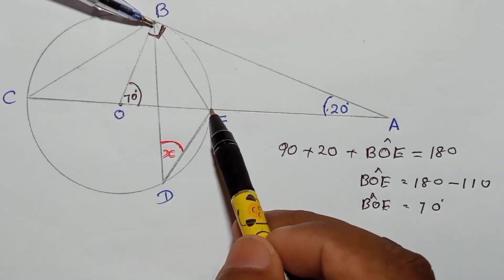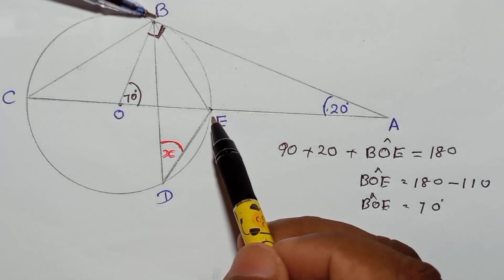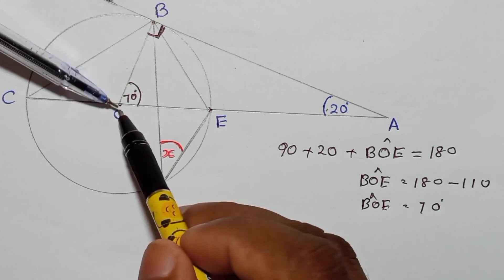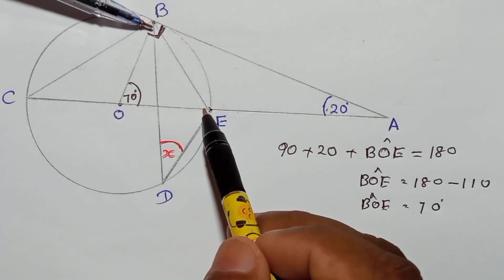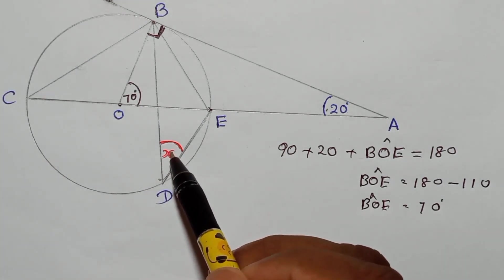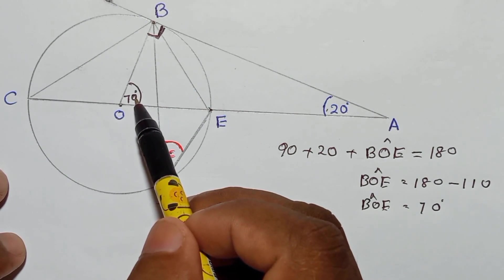From the same two points, B and E, look: from B and E go to center, from B and E go to circumference. When you have this type of situation, the circumference angle, which is x, should be half of this.